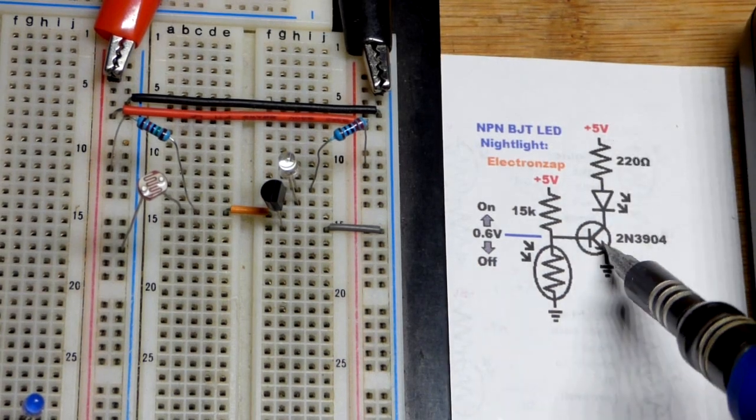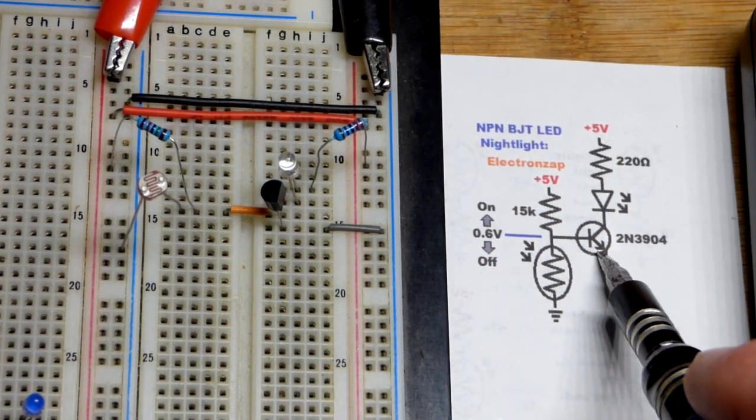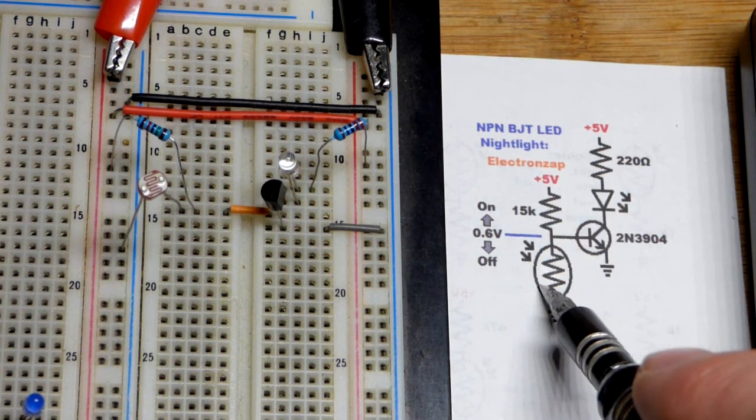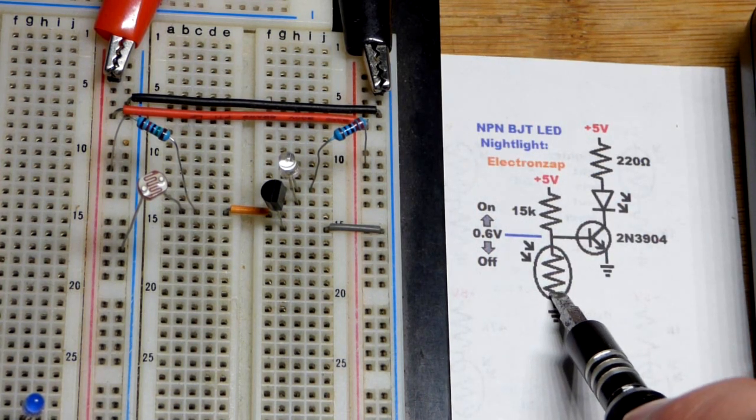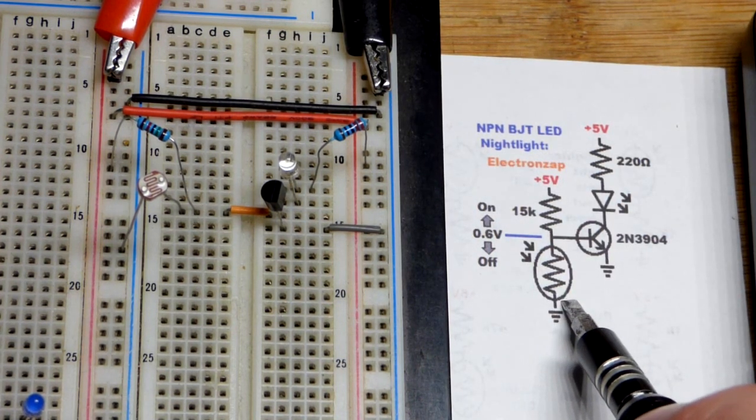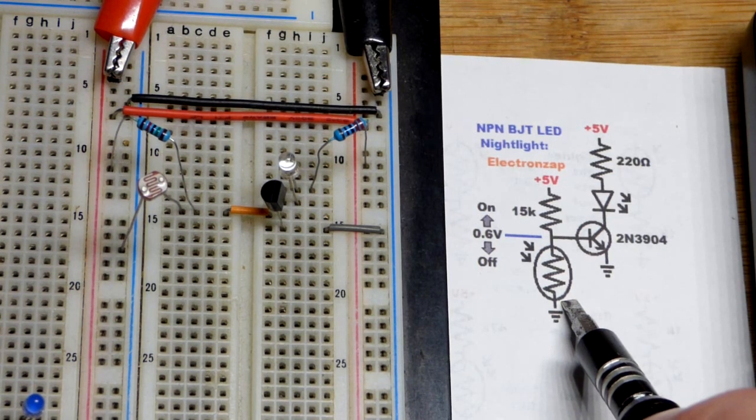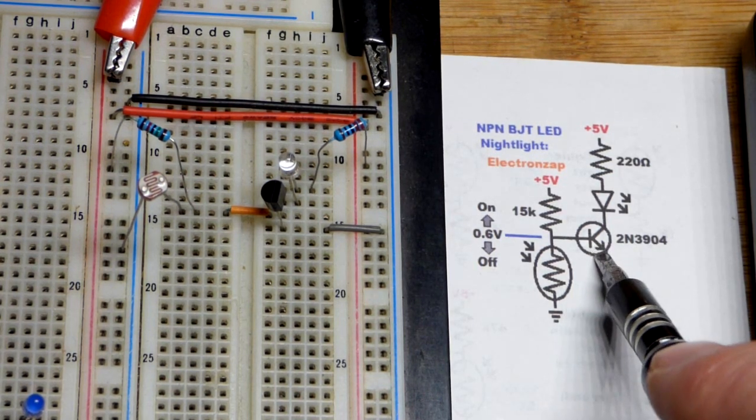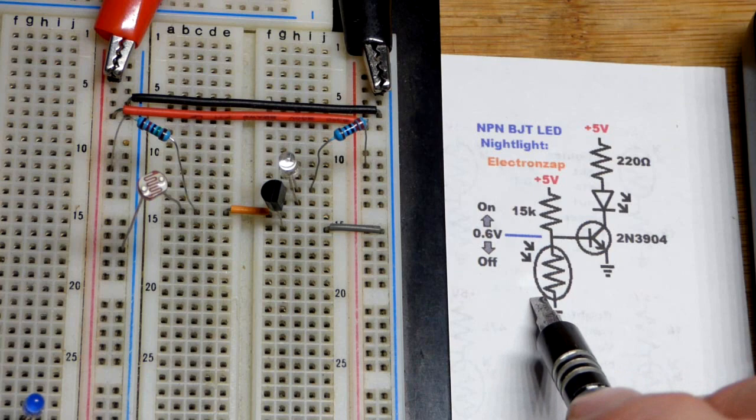So now in this video we're going to take an NPN bipolar junction transistor and make a night light by using a light dependent resistor. I made similar circuits using the 555 timer. Those were more for demonstration. This is a more practical circuit for a number of reasons.